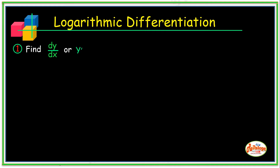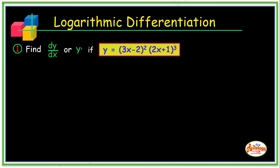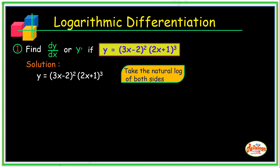We will find dy/dx, or y prime, if y is equal to (3x - 2)² times (2x + 1)³. We have y equal to (3x - 2)² and (2x + 1)³. What we will do first is take the natural logarithm of both sides of the equation. So we have ln(y) is equal to ln of (3x - 2)² times (2x + 1)³.